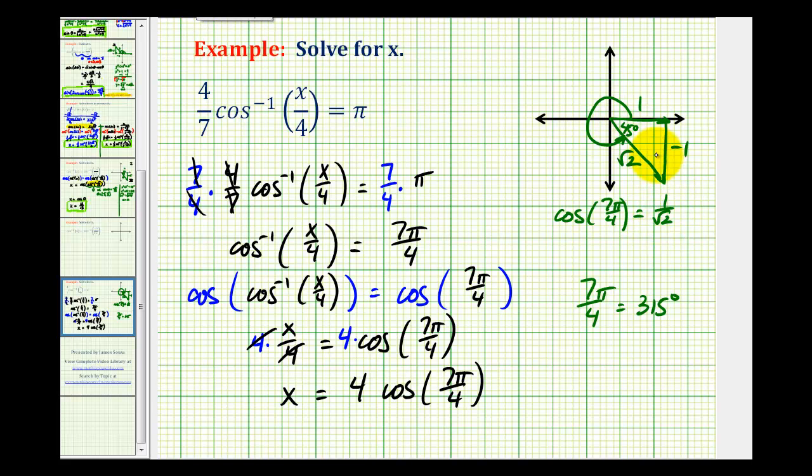If we rationalize this, we get square root two over two. So x equals four times square root two over two. Four over one times square root two over two simplifies to two square root two.